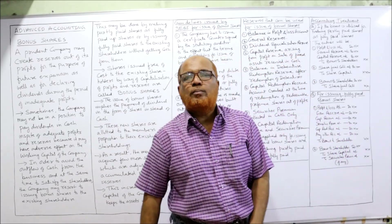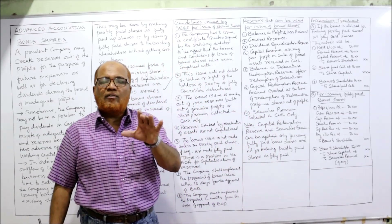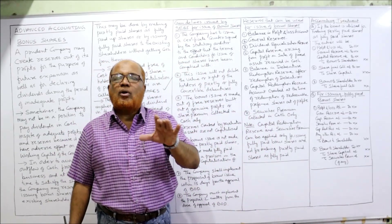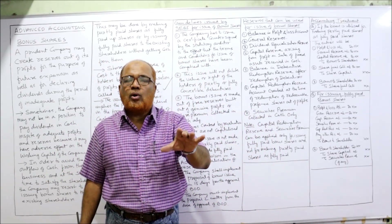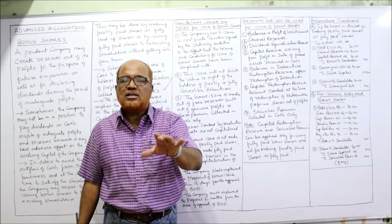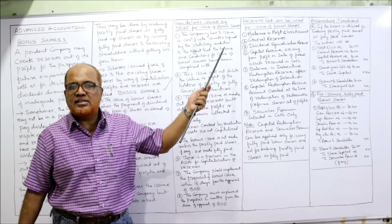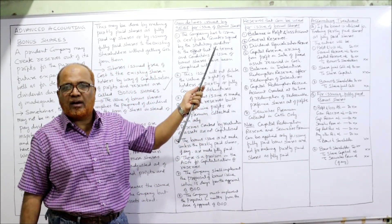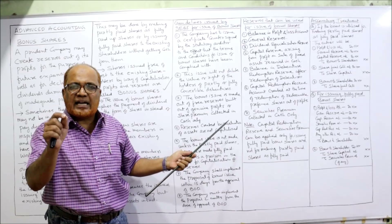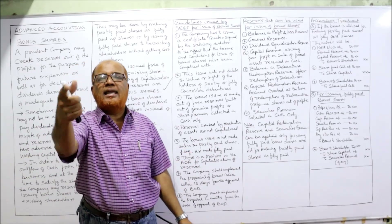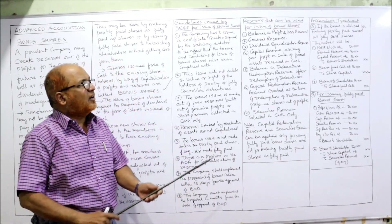Guidelines are issued by SEBI — Securities and Exchange Board of India. In India, whenever a company wants to issue bonus shares, they have to follow the guidelines issued by SEBI. Only after satisfying these guidelines is the company eligible to issue bonus shares.